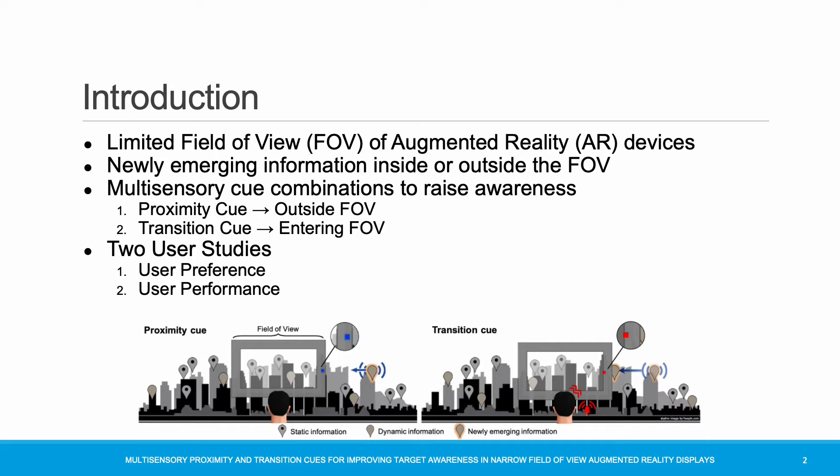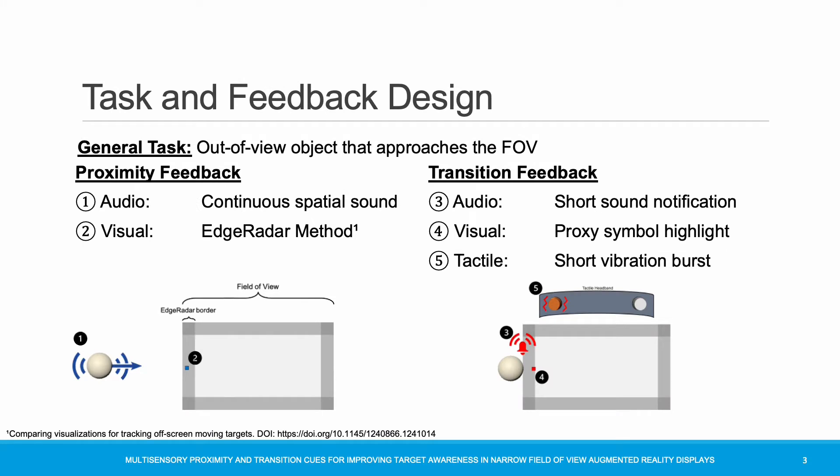We distinguish between proximity and transition cues in either visual, auditory, or tactile manner. Proximity cues are intended to enhance spatial awareness of approaching out-of-view objects. Transition cues inform the user that the object just entered the field of view of the device. We performed two user studies, which we will discuss in detail on the next slides. The general task for both user studies consisted of being aware of an invisible out-of-view object that approaches the field of view and enters it after some time.